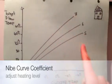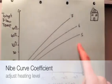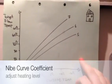If we decrease our curve coefficient, we have less heat inside our house and less bills.